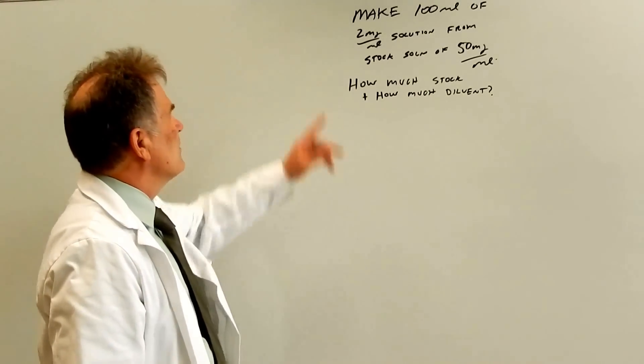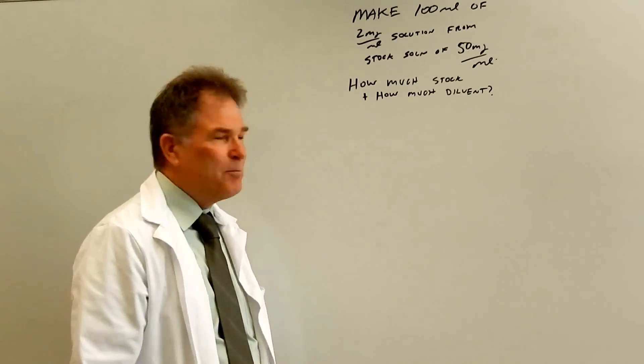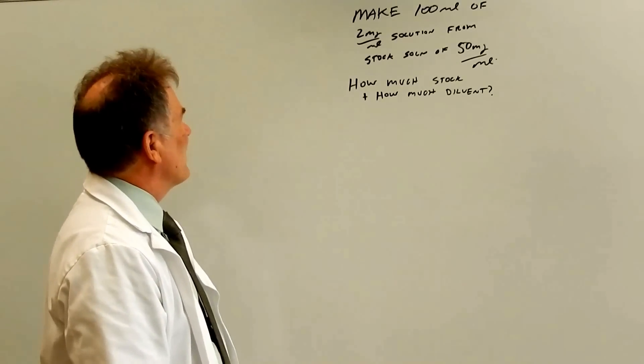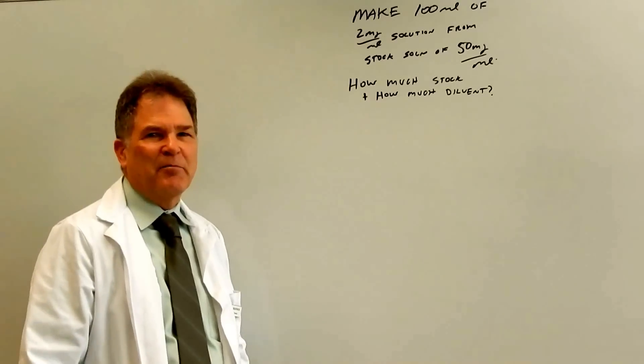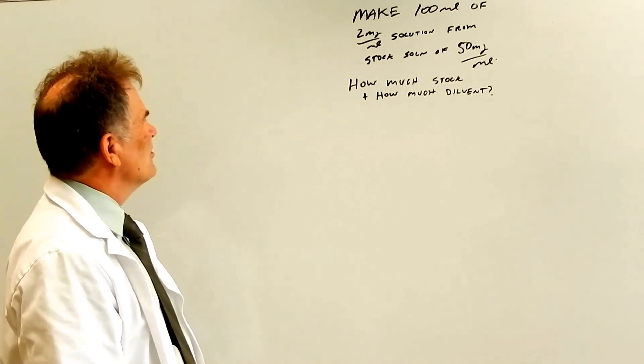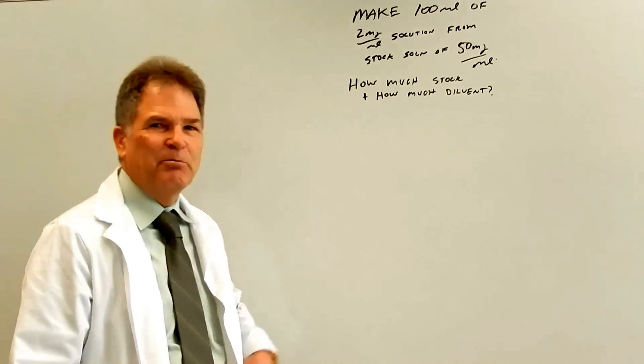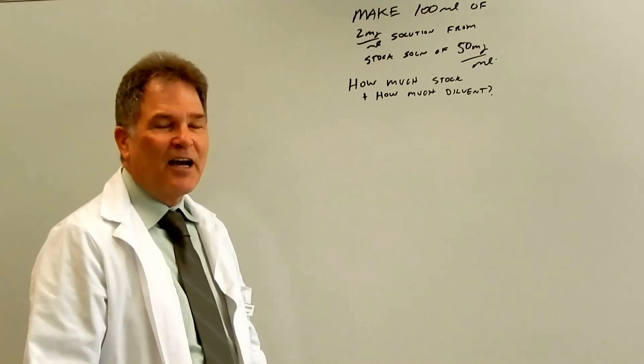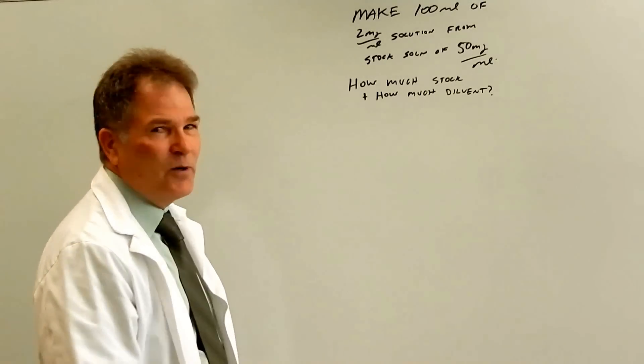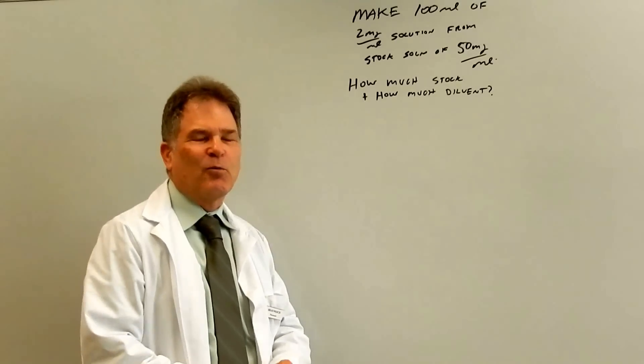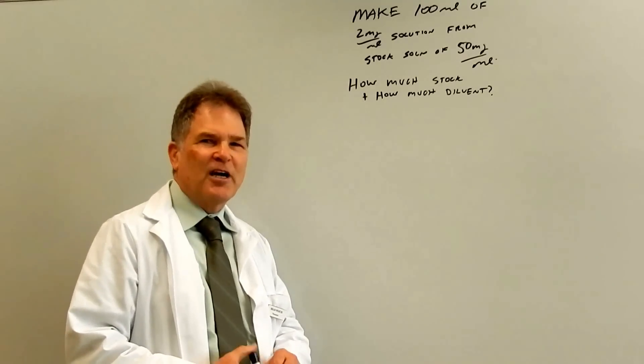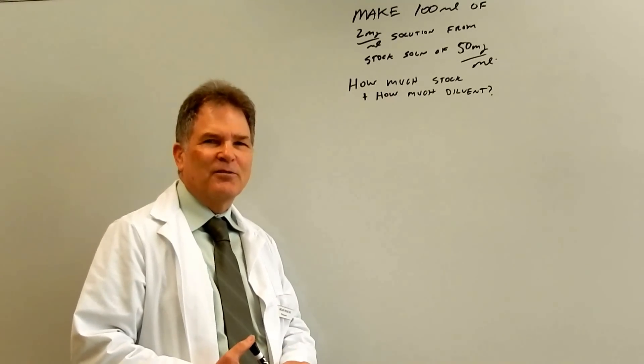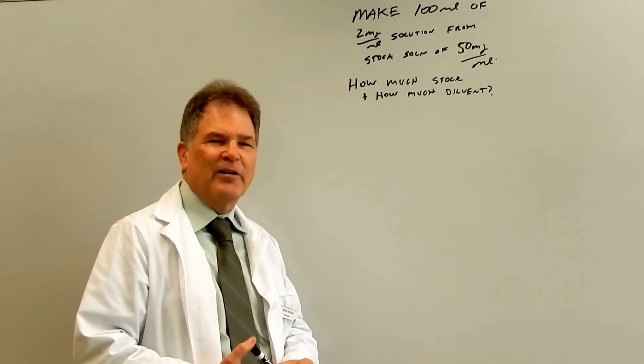Okay, so this is a problem I put up on the board here: make 100 ml of 2 milligram per ml from a stock solution of 50 milligram per ml. Now, let's just say that you had a hundred gallon aquarium and you decided you're going to put two fish per gallon in the aquarium.